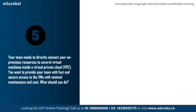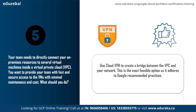Question 5: Your team needs to directly connect on-premises resources to several virtual machines inside a Virtual Private Cloud. You want fast and secure access to the VMs with minimal maintenance and cost. The solution is to use Cloud VPN to create a bridge between the Virtual Private Cloud and your specific network. This is the most feasible option as it adheres to Google's recommended cloud practices, ensuring minimal cost and maximum reliability.